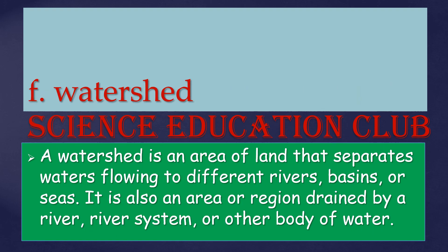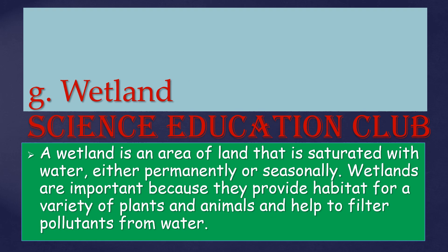A watershed is an area of land that separates water flowing to different rivers, basins, or seas. It is also an area or region drained by a river, river system, or other body of water. A wetland is an area of land that is saturated with water, either permanently or seasonally. Wetlands are important because they provide habitat for a variety of plants and animals and help to filter pollutants from water.